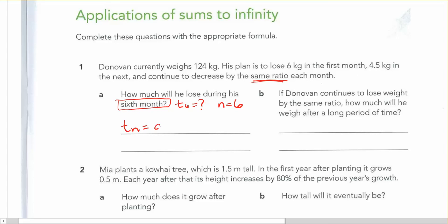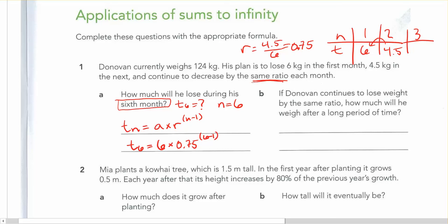So t_n is equal to a times r to the power of n minus 1. So here we have 6 times r. Well, what's r? We've got n and t. Our first was 6. Our second was 4.5. Our third, as we go on. So again, with a geometric sequence, r is going to be equal to 4.5 divided by 6. We get 0.75. So 0.75 to the power of 6 minus 1. Here we can see he's going to lose 1.42 kgs in the sixth month.